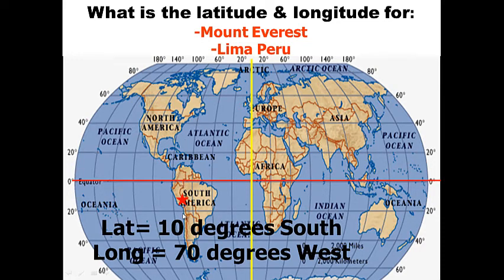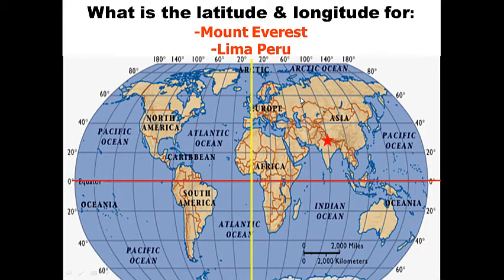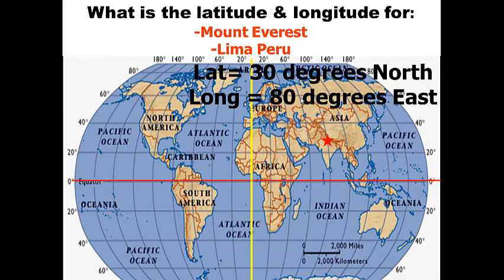Now Mount Everest — the tallest mountain in the world. What is the latitude and longitude for it? Do this on your own and record the coordinates on your notes. Hopefully it didn't take you too long. Hopefully you came up with about 30 degrees north of the equator and 80 degrees east.